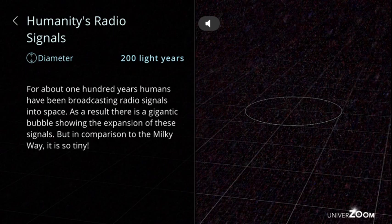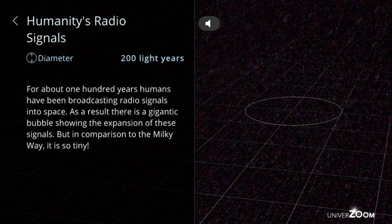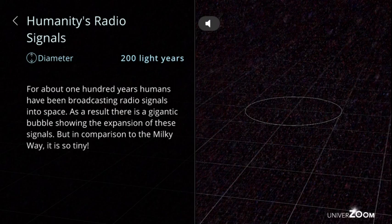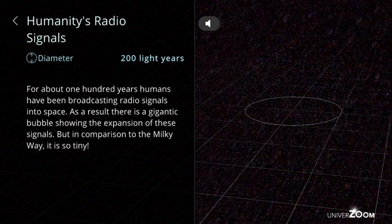Humanity's radio signals, diameter: 200 light years. For about 100 years, humans have been broadcasting radio signals into space. As a result, there is a gigantic bubble showing the expansion of these signals. But in comparison to the Milky Way, it is so tiny.